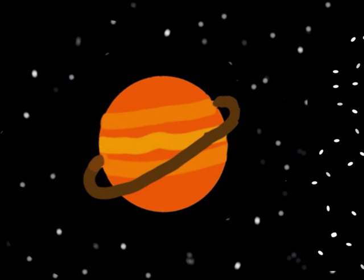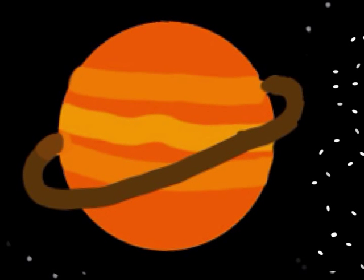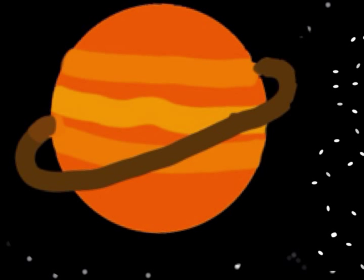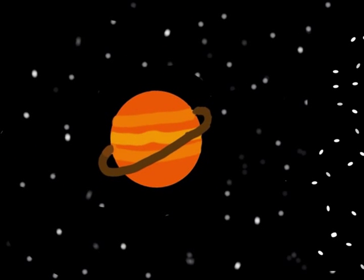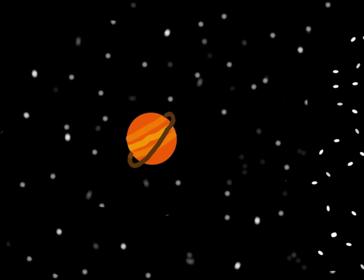As we all know, Saturn has rings, but the rings aren't flat. They are made up of many rocks ranging in size from little tiny pieces of grain to huge boulders.